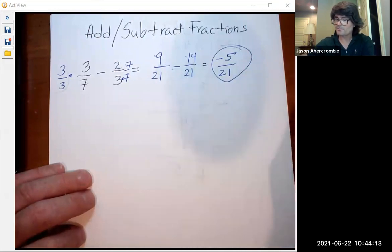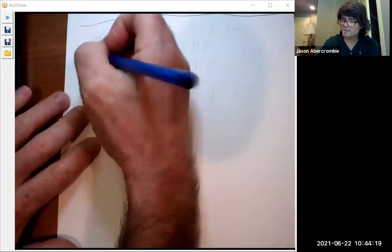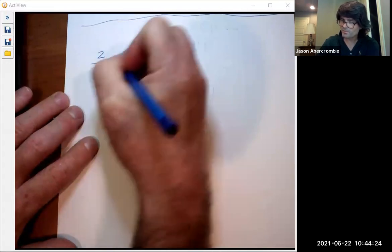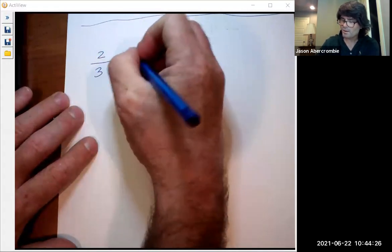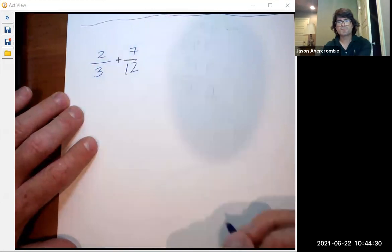Let's try another one. Let's do two thirds plus seven twelfths.